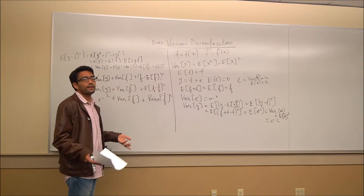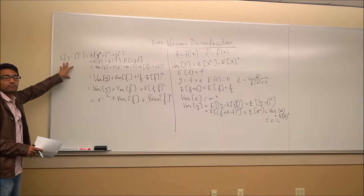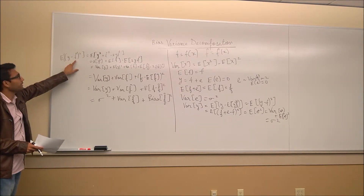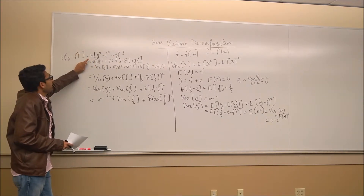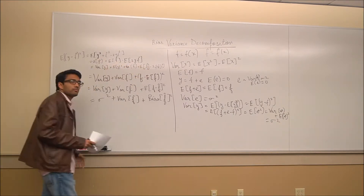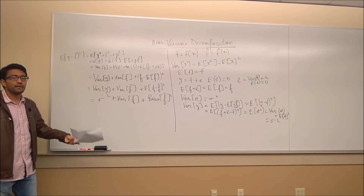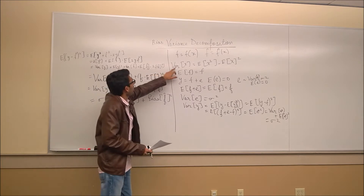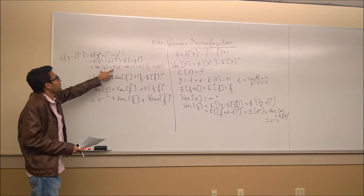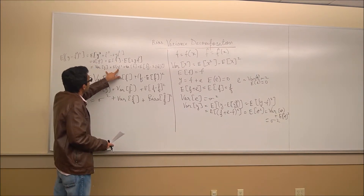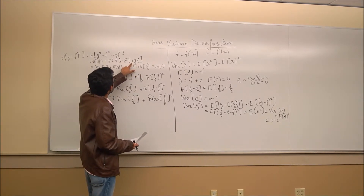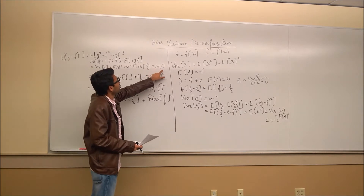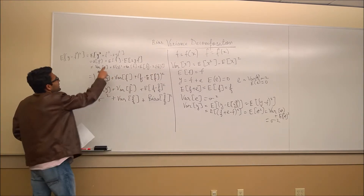Now we use this result to find the mean squared error. The expectation of (y minus f-cap) squared — opening up the square and applying the linearity of expectation, where E[a + b] = E[a] + E[b] — we write E[y squared] as variance of y plus (E[y]) squared, and then expand the cross terms. Since E[y] = f, this simplifies, leaving E[f-cap] and the remaining terms.